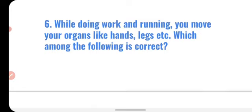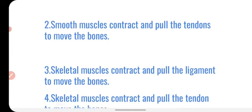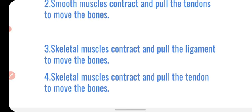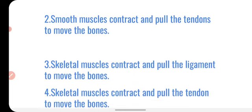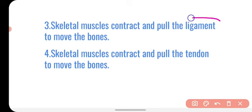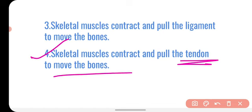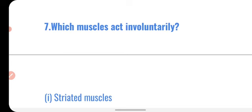The next question: while doing work and running, you move organs like hands and legs — which statement is correct? Options involve smooth or skeletal muscles contracting to pull ligaments or tendons. Muscles we move by conscious will are skeletal muscles. Tendons are the connective tissue that connect skeletal muscles with bones. So the correct option is: skeletal muscles contract and pull the tendon to move the bones.